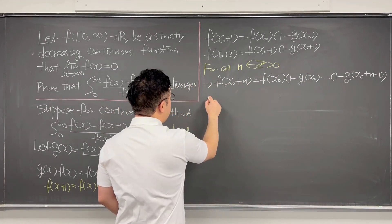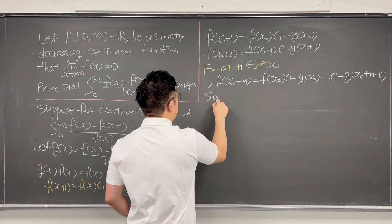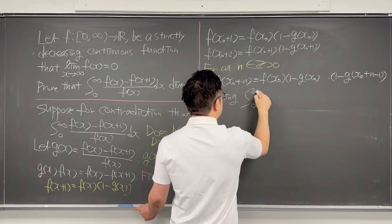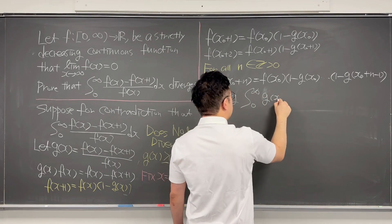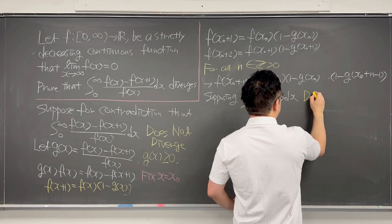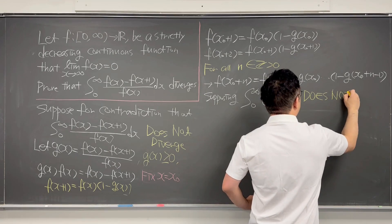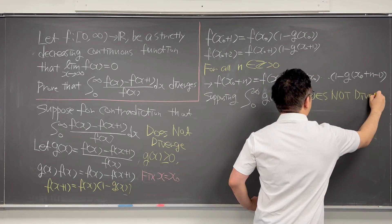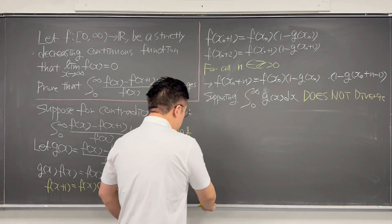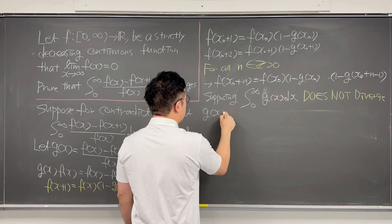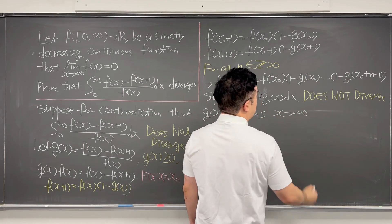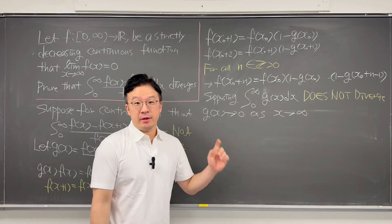Let's recall that we're supposing this integral from 0 to infinity of g(x) dx does not diverge — this is what we're supposing for the contradiction. Then we can say g(x) will go to 0 as x goes to infinity, and of course g(x) should be greater than 0.